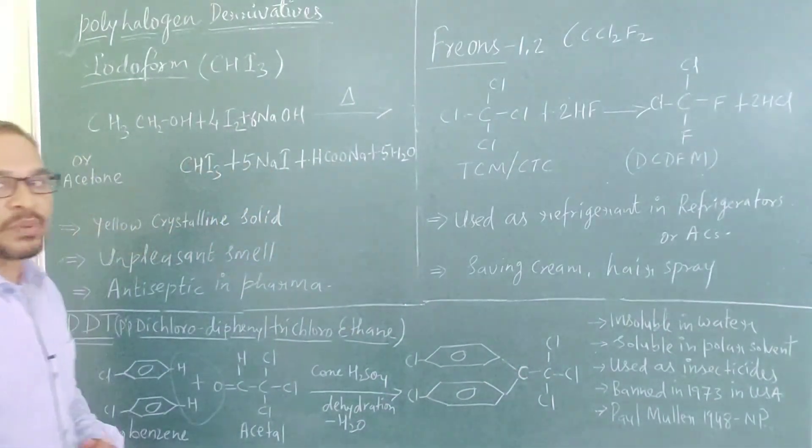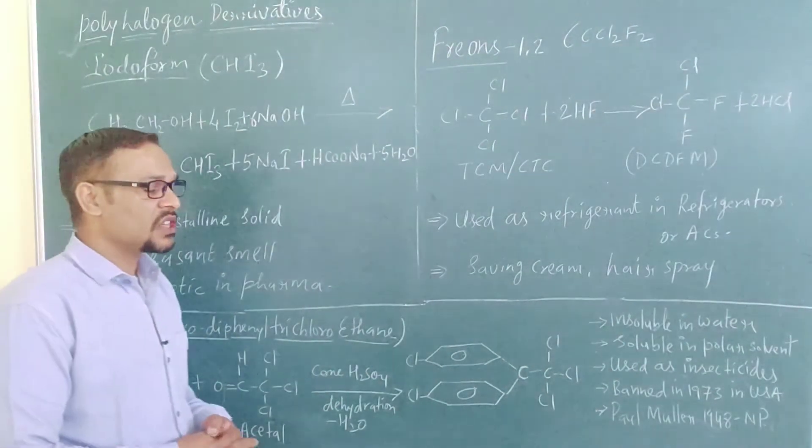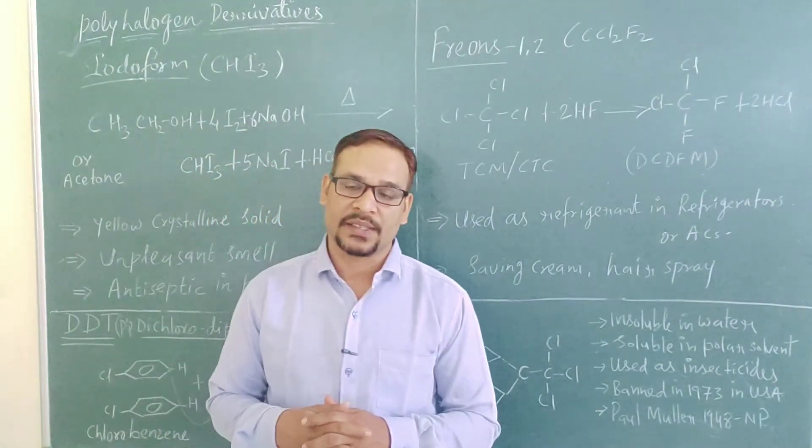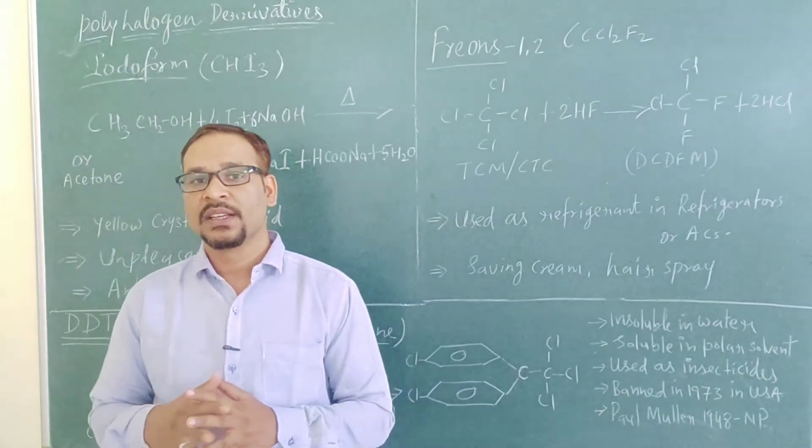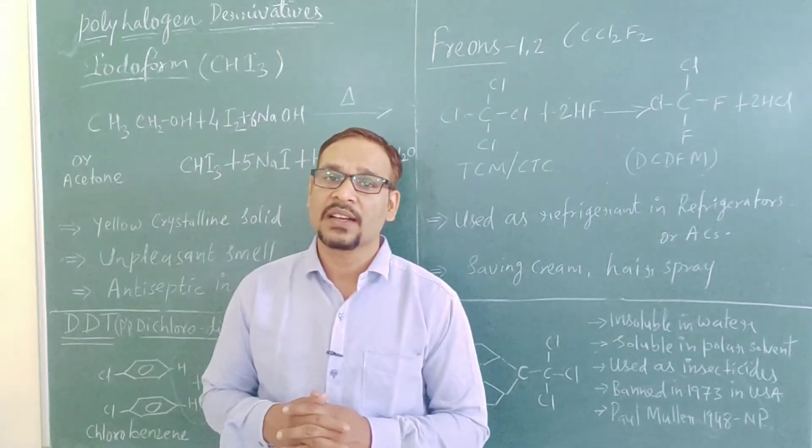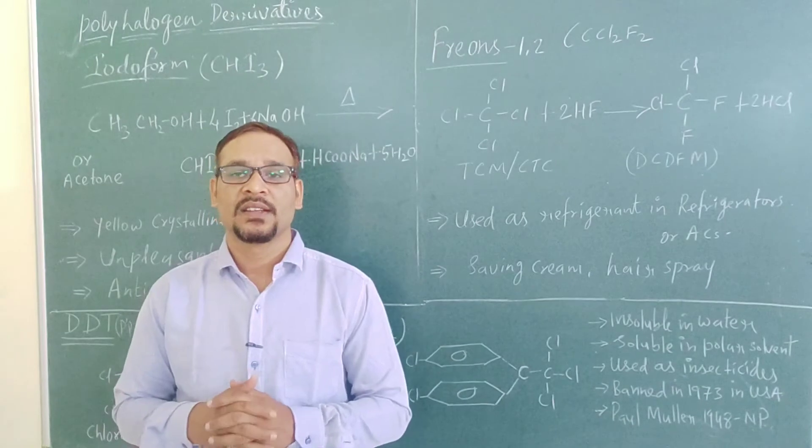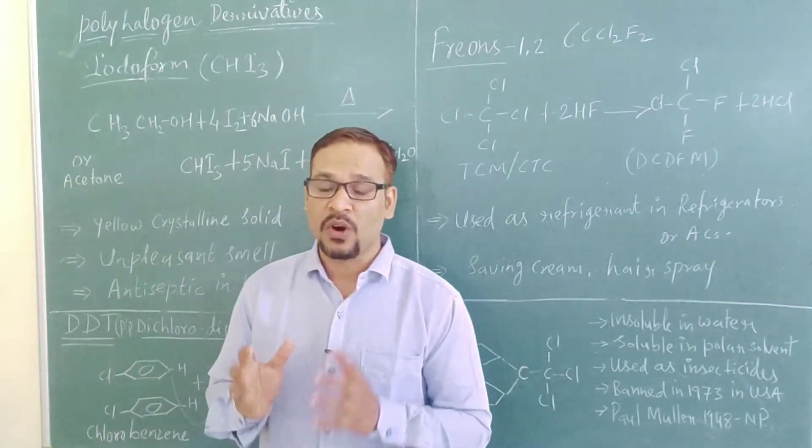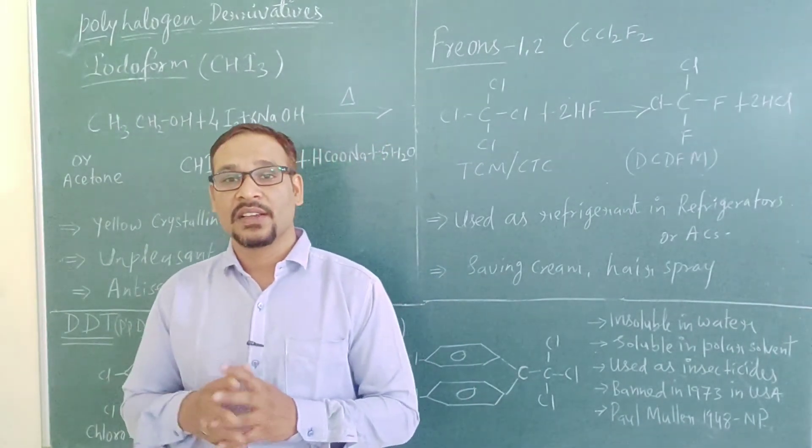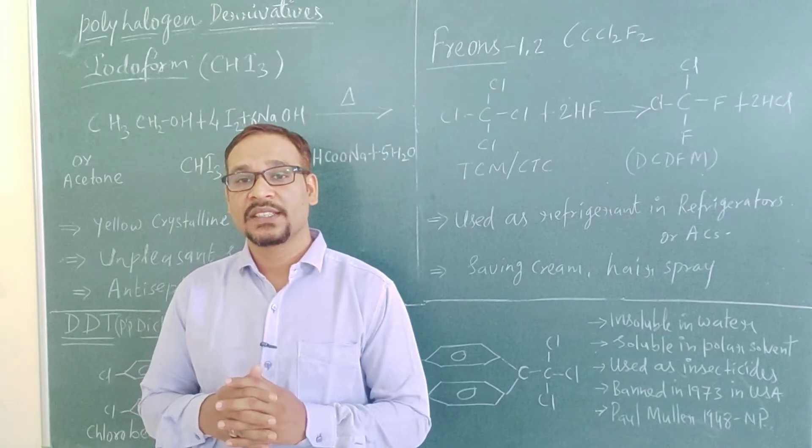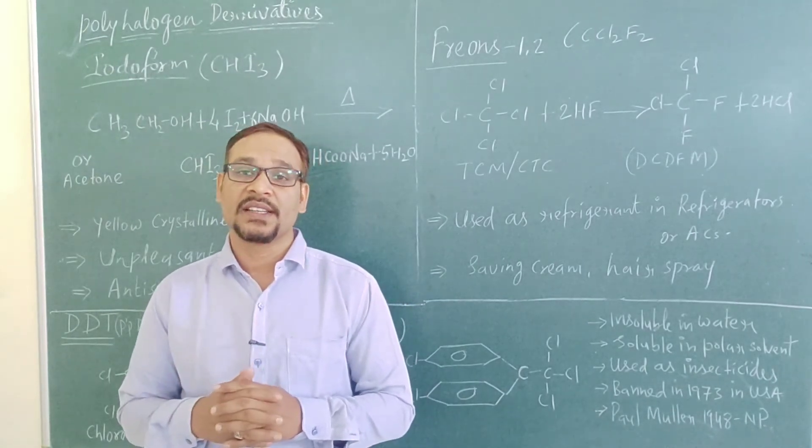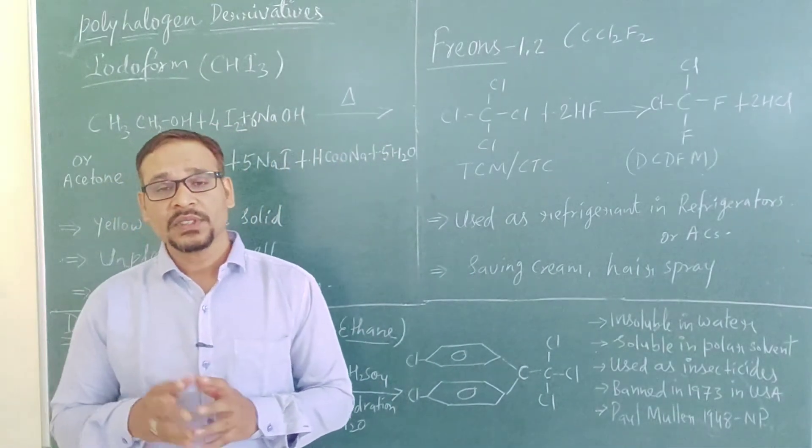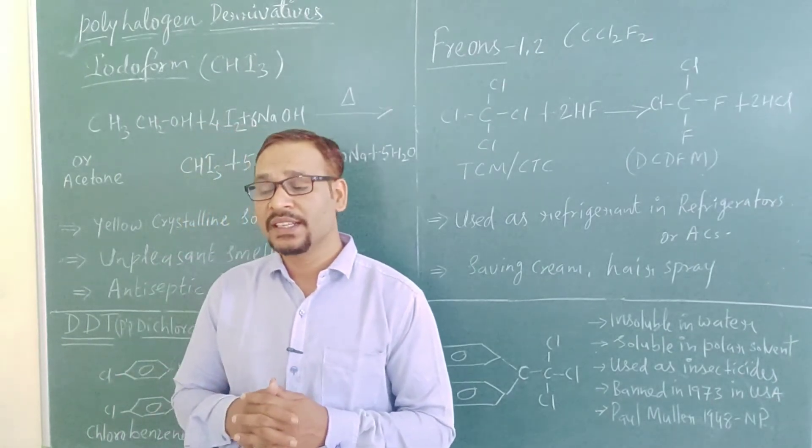Para para dichlorodiphenyl trichloroethane. This is how it is prepared. I hope you understand. Now let's talk about DDT. DDT is insoluble in water and soluble in polar solvent. Many substances which are insoluble in water are soluble in polar solvent. It is a powerful insecticide. Because Paul Muller synthesized this effective insecticide, he got the Nobel Prize in 1948 after discovering DDT.